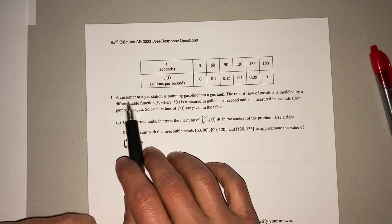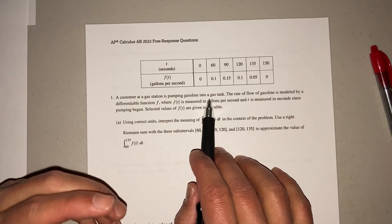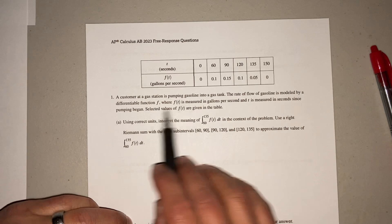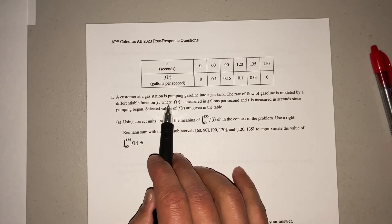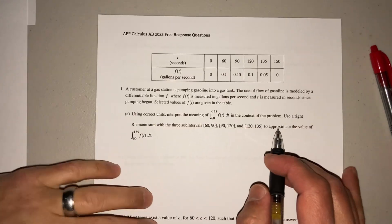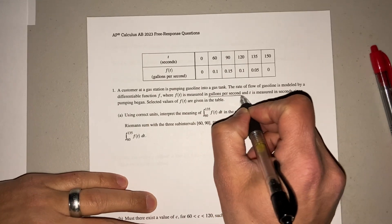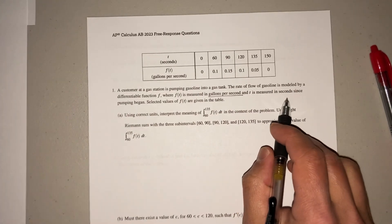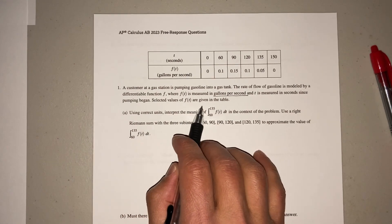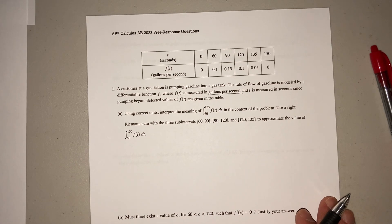It says a customer at a gas station is pumping gasoline into a gas tank. The rate of flow of gasoline is modeled by a differential equation F, where F of T is measured in gallons per second. That's important. T is measured in seconds since the pumping began. Selected values of F of T are given in the table.